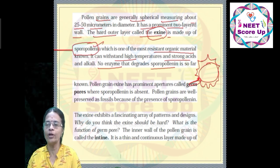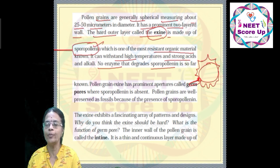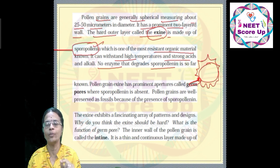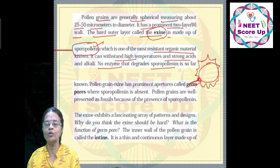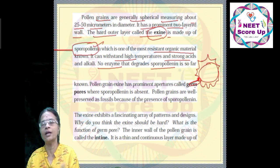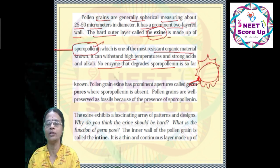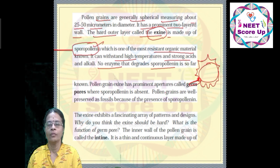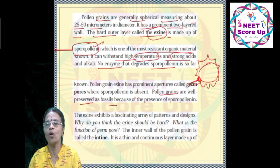There is a germ pore — a region in the exine where sporopollenin is absent. The germ pore is where the pollen tube emerges. Because of sporopollenin, the exine is preserved as a fossil. It withstands high temperature and strong acids.